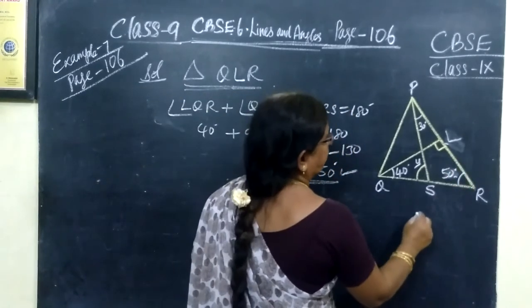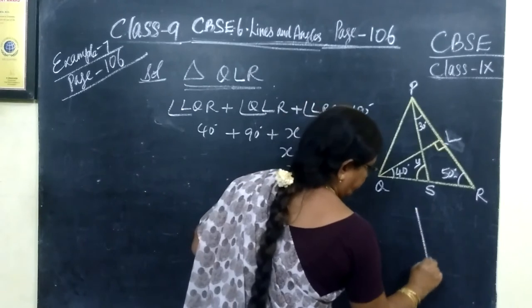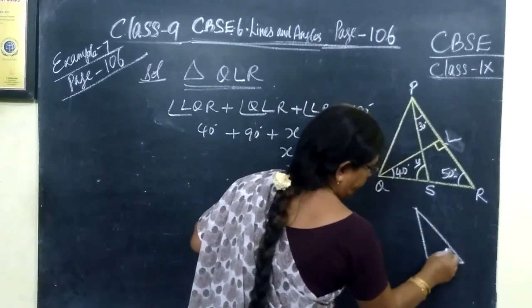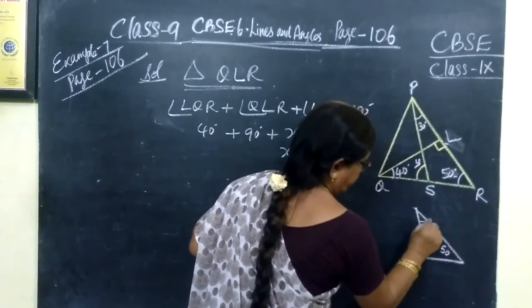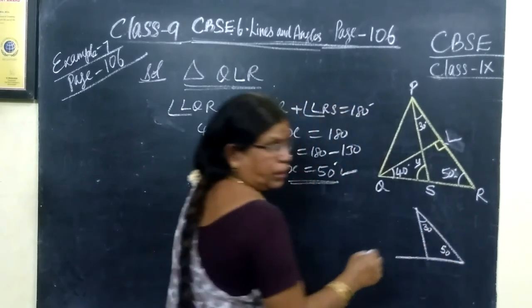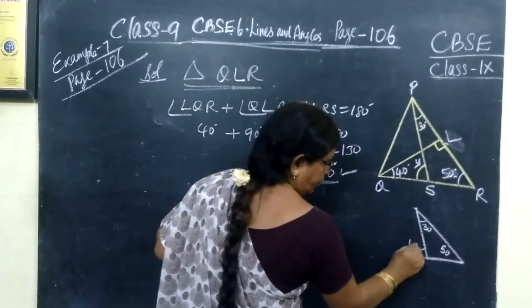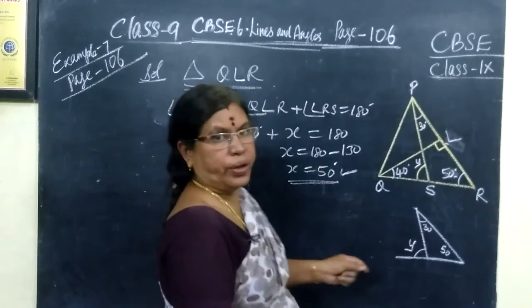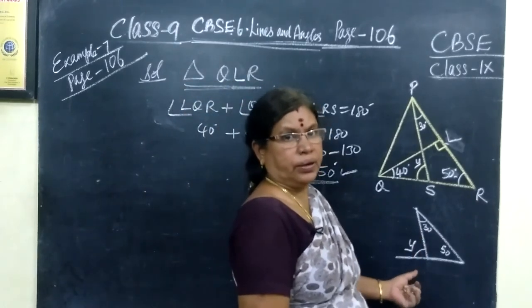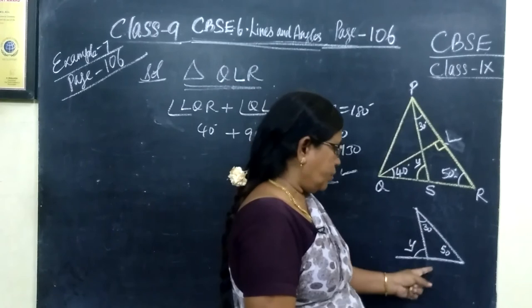Now we want to find y. This is 50 and this is 30. You produce the line, which is named y. Definitely y is the exterior angle. If you draw it separately, you can understand clearly.